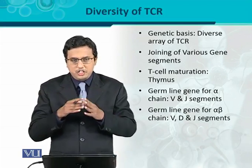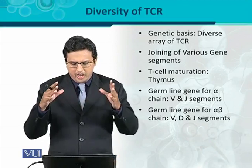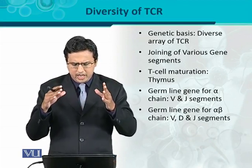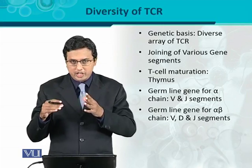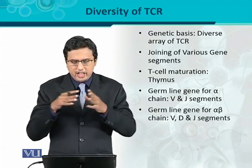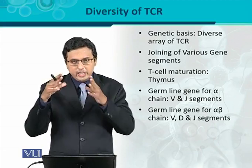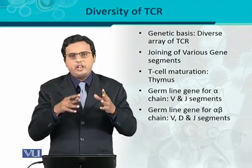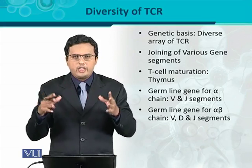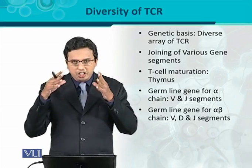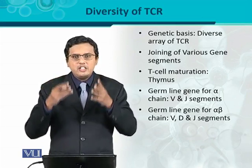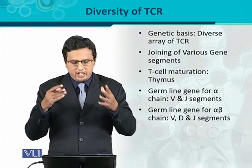The germline gene for the beta chain contains an additional segment. For the beta chain, there are three segments: V for variable, D for diversity, and J for joining. So the gene segment for the beta chain contains an additional D segment, compared to the alpha chain.